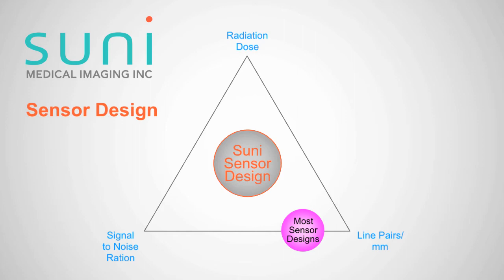The other two terms people use to assess sensors are: first, the ability to detect objects, which to the engineer translates into signal-to-noise ratio; and second, the ability to detect small details in the image. So you have signal-to-noise ratio, you have dose, and you have the ability to detect small details.